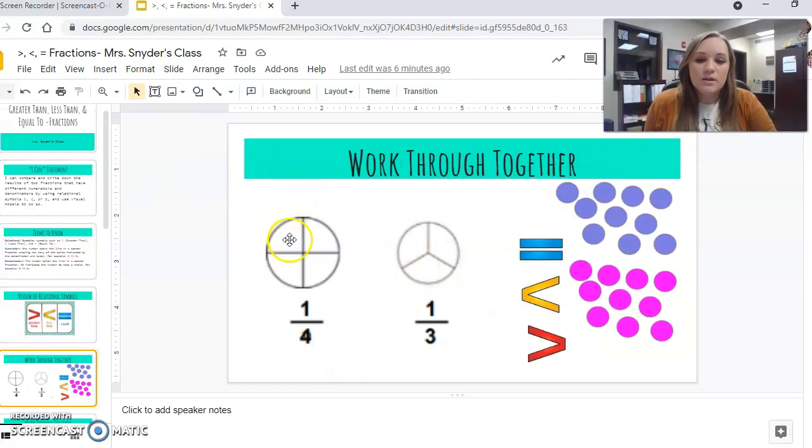So, we're going to go right in to kind of work through it together. And sorry, these are a little blurry. I was trying to copy and paste them off of the worksheet that we would have done in class if we weren't remote learning. And they came through a little bit blurry. But we can still work with them. So, we're going to decide if one-fourth or one-third is greater, or if one-fourth is greater than, less than, or equal to one-third. Again, the top number is the numerator. The bottom number is the denominator.